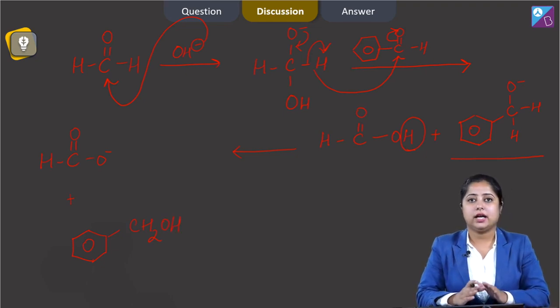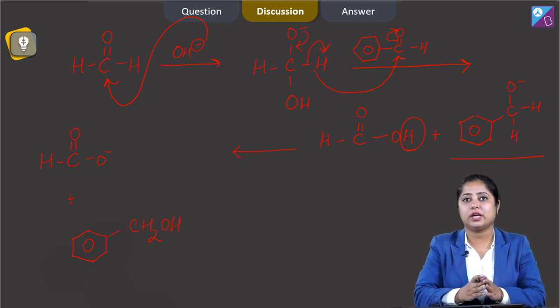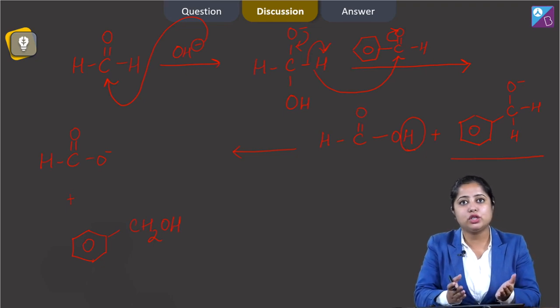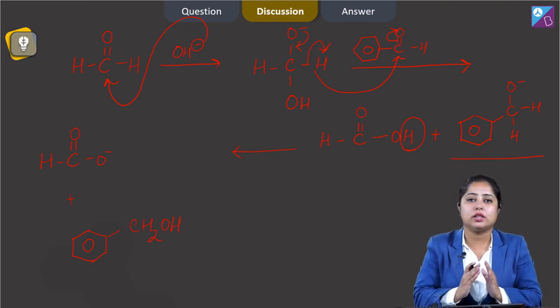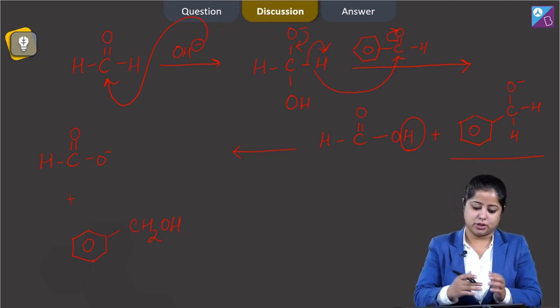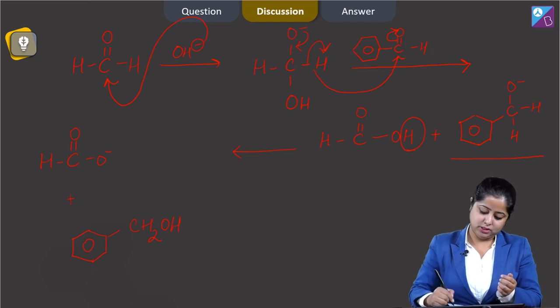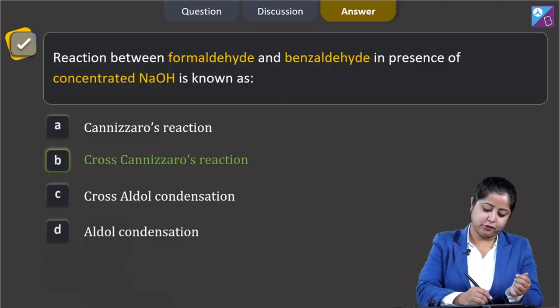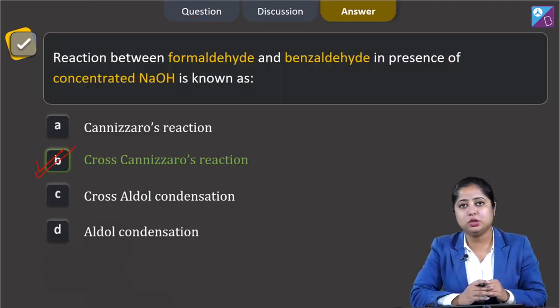So, students, it is very clear that the Cannizzaro reaction takes place between two different molecules. So we call this reaction the cross Cannizzaro reaction. That means the correct answer for this question is option B.